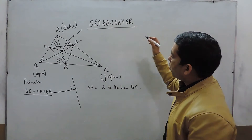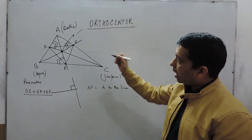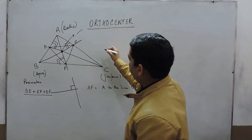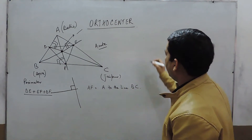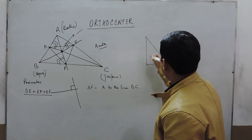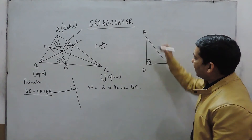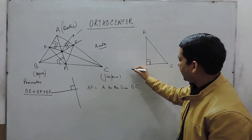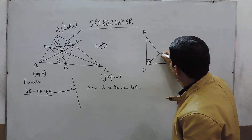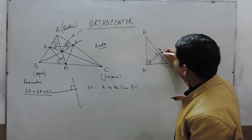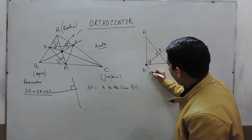If we talk about the orthocenter, it is very important that the orthocenter can be inside the triangle and it can also be outside the triangle. In an acute angle triangle, it is always inside the triangle. But when we talk about a right angle triangle — say triangle ABC which is right-angled at point B — the perpendicular line on BC and the perpendicular line on AB all pass through a point D, and this point is known as the orthocenter.